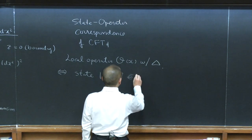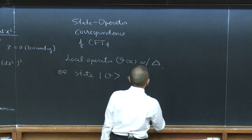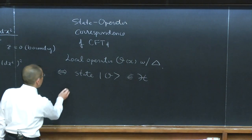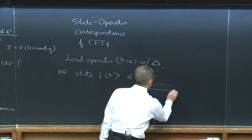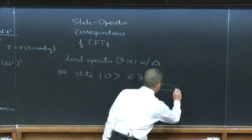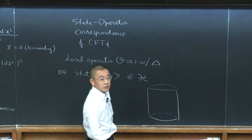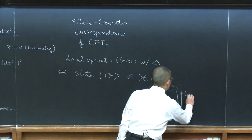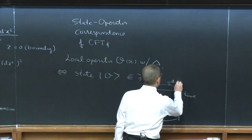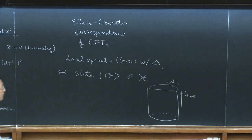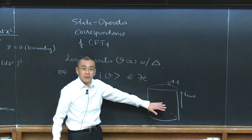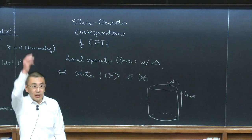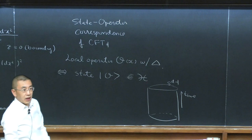This conformal field theory Hilbert space is defined on the cylinder. We are placing the conformal field theory on the cylinder. You have a D-dimensional spacetime where the conformal field theory is defined, with a time direction, and you have a D minus one dimensional sphere. A space-like section of this conformal field theory is a D minus one dimensional sphere, and you can propagate this in the time direction.